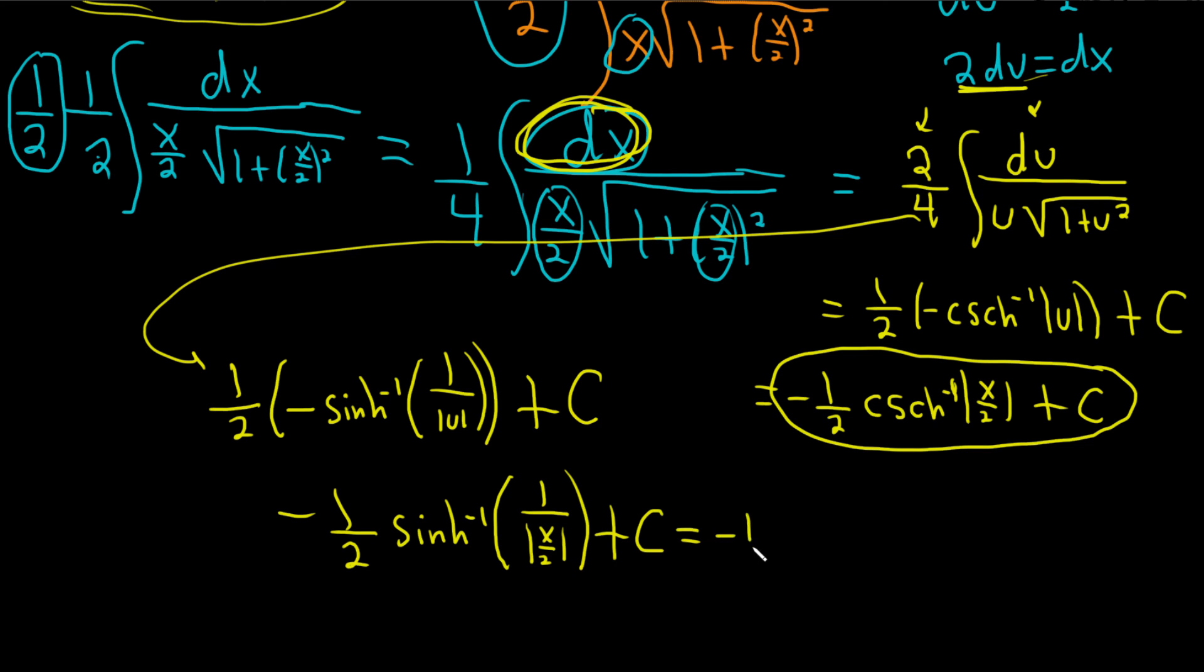This would be negative 1 half sinh inverse. The 2 can come out of the absolute value. It doesn't really matter. But I'll leave it in. Or I'll take it out. It doesn't matter. Because it's a 2. So it's 2 over the absolute value of x plus c. Same thing here. You can take the 2 out of the absolute value. You just can't take the x out because you don't know what x is.